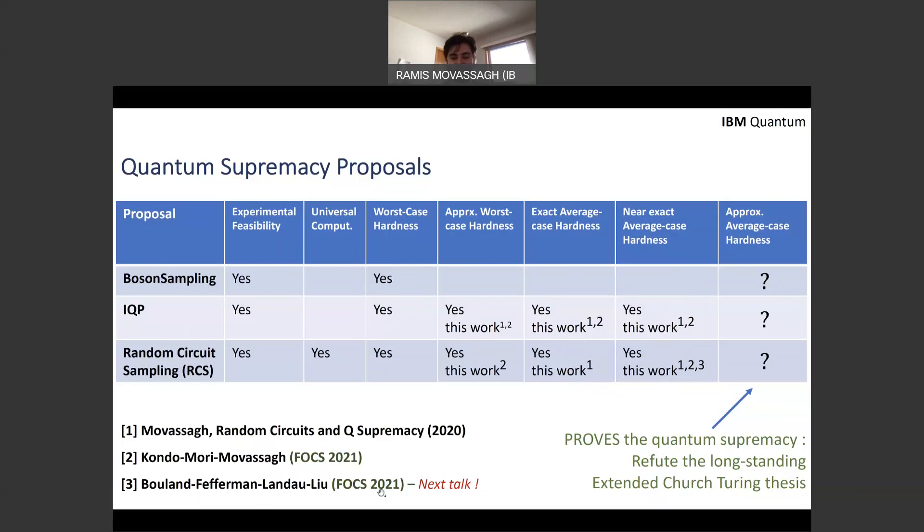And the near exact average case, this is the tolerance to 2^{-M log M}, was proved by us and also our colleagues, Bouland, Fefferman, Landau, and Liu, which will be the, which we'll talk about it in the next talk. Now the different, this is a, so they obtained similar results as our theorem 2 in the paper.